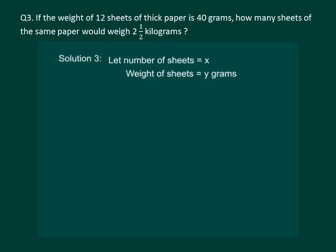Let us read the question on the slide. If the weight of 12 sheets of thick paper is 40 grams, how many sheets of the same paper would weigh 2.5 kilograms? From our general knowledge, more the number of sheets of paper, more will be their weight. So the number of sheets and their weights are directly proportional to each other.